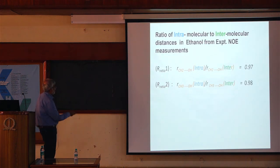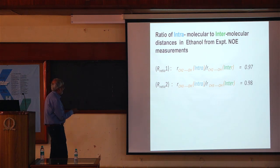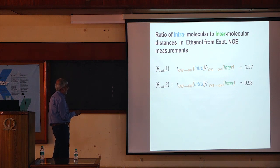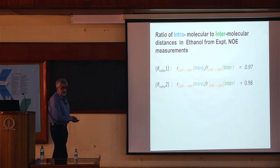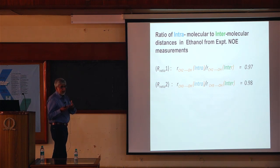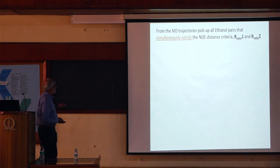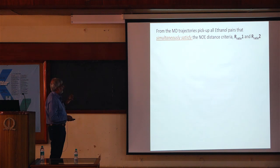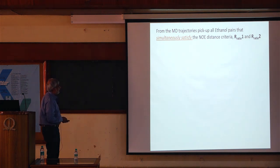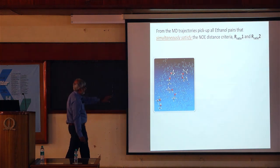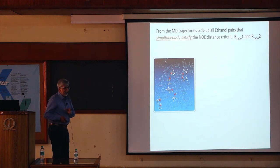Between these two experiments we get two ratios: ratio one between the methylene and the hydroxyl, and ratio two between the methyl and the hydroxyl. We then go back to our MD simulations and from the trajectories pick up all pairs of molecules that simultaneously satisfy the NOE distance criteria.